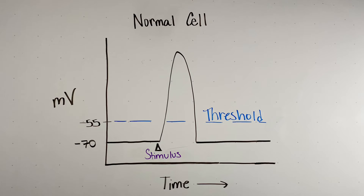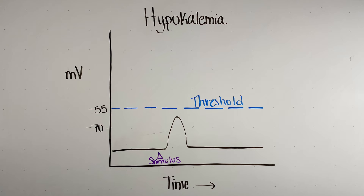The symptoms caused by hypokalemia result from the fact that potassium plays a huge role in action potentials and muscle function. In a normal muscle cell, the resting membrane potential is around negative 70 millivolts. For an action potential to occur, a stimulus must cause the cell to depolarize to threshold, and action potentials in muscle cells equal muscle contraction. Hypokalemia, however, hyperpolarizes the resting membrane potential — it moves it further from threshold. So we now need a bigger stimulus to reach threshold, meaning an ordinary stimulus will not cause an action potential and thus will not cause muscle contraction. A lack of muscle contraction presents as muscle weakness.